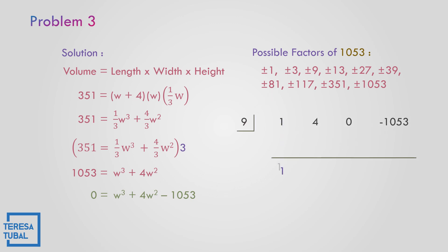Let us try 9. Bring down 1. 1 times 9 is 9. 4 plus 9 is 13. 13 times 9 is equal to 117. 117 times 9, the answer is equal to 1053. So negative 1053 plus 1053 — the remainder is equal to 0. The remainder is equal to 0. So the remaining coefficients are 1, 13, and 117.